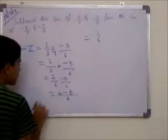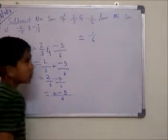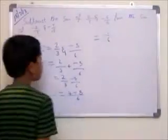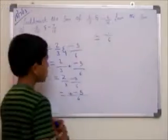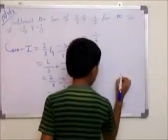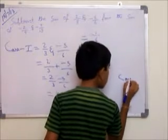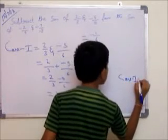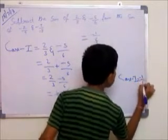And here 5 is written and 5 is in negative, so answer will be also in negative. In case 1 we got the answer is minus 1 by 6. We will keep it here. Case 1 minus 1 by 6.